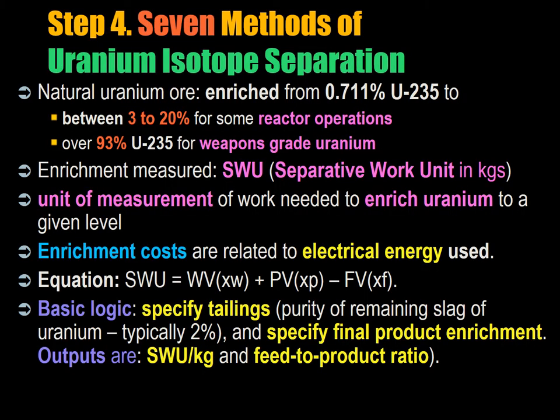We're going to explain the seven methods of uranium isotope separation. It's technical but also very political, because different systems have different vulnerabilities to intervention and detection. When a country is going from a non-nuclear to a nuclear state, it wants to do so as stealthily as possible. Natural uranium ore must be enriched from 0.711% — the proportion of uranium-235 in uranium-238 — up to 3–20% for use in a nuclear reactor, or over 93% for weapons grade.